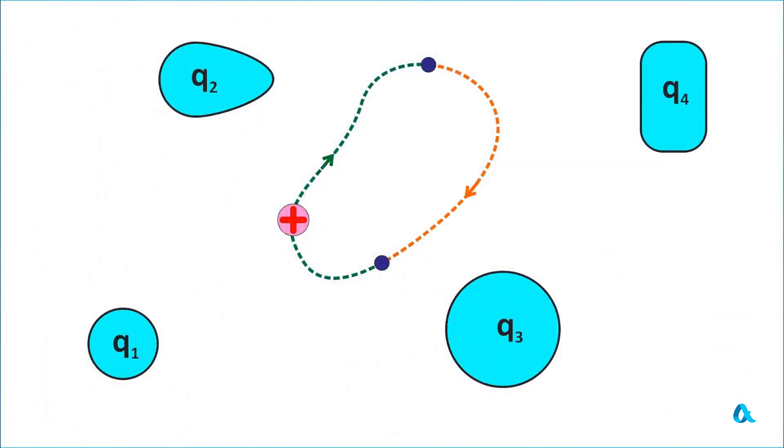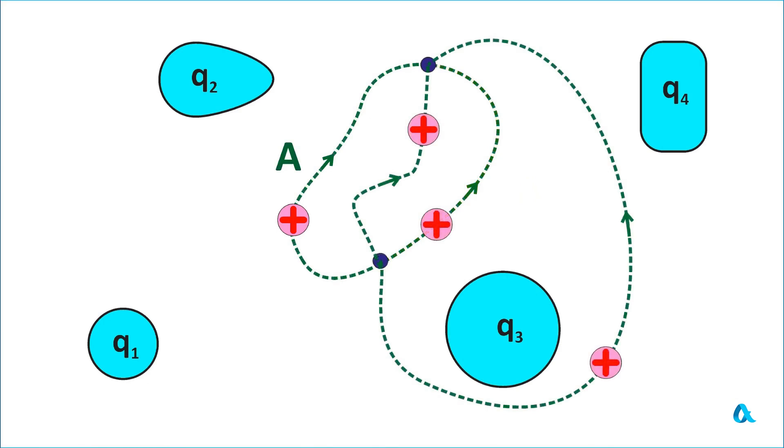From this, the second idea immediately follows. Let's divide the closed trajectory into two parts. If the work on one of them is equal to A, then on the second part it will be equal to minus A, so that their sum is zero. Now let's reverse the direction of movement on the second part. Then the work on it will also be equal to A, just like on the first part. Therefore, when moving a test charge from one point in space to another, the work does not depend on the trajectory along which this movement occurs.